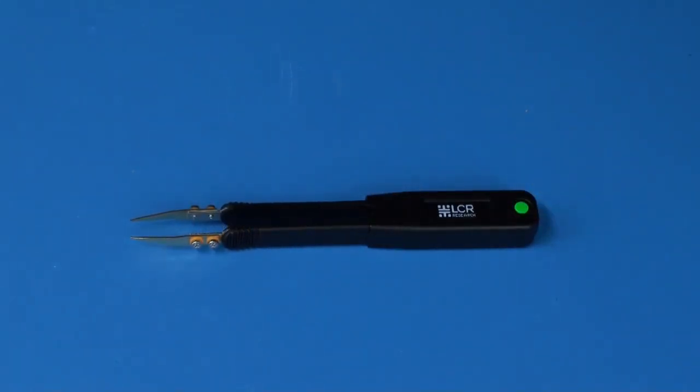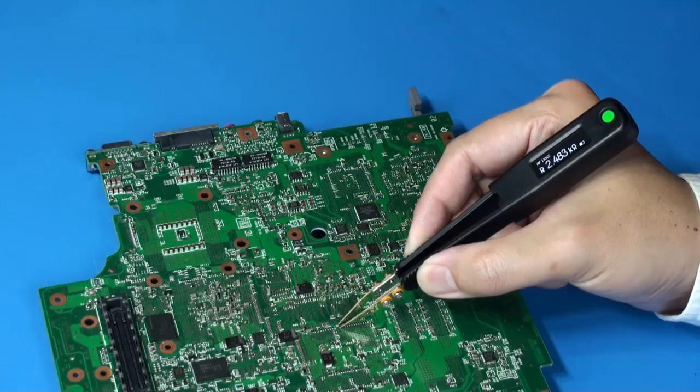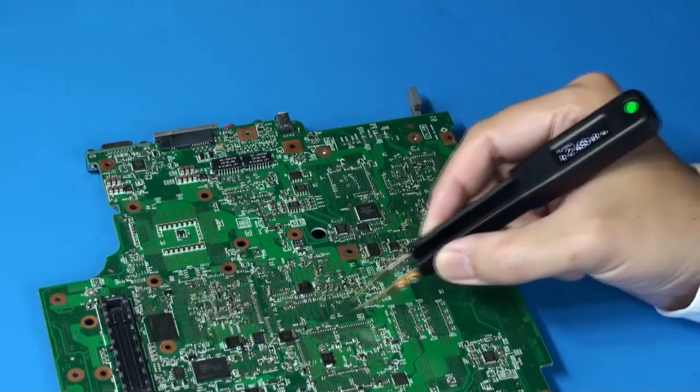The LCR Elite 2 is our latest tweezer style LCR meter from the Elite series. Built with a more advanced chipset and algorithm, the Elite 2 greatly improves measurement accuracy.